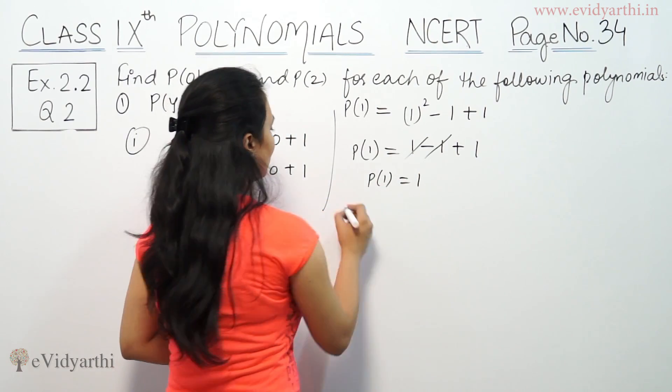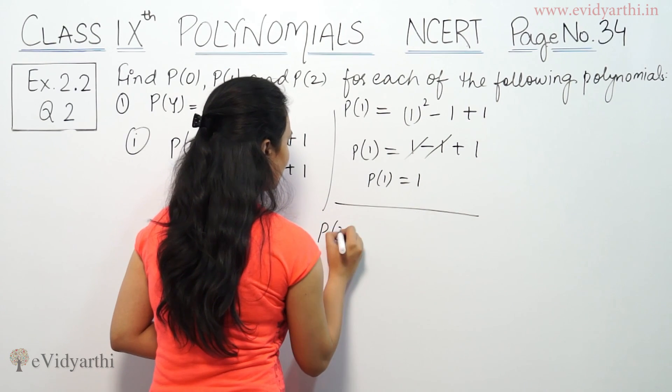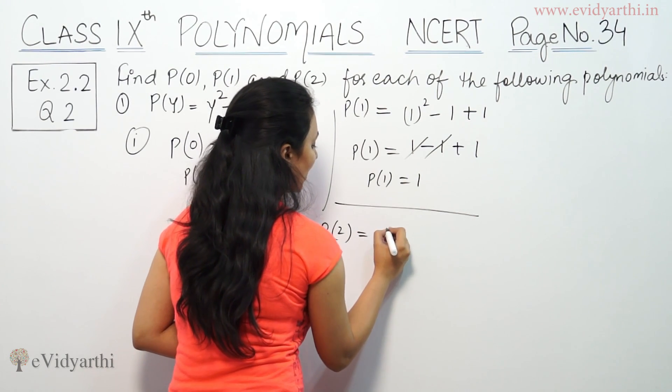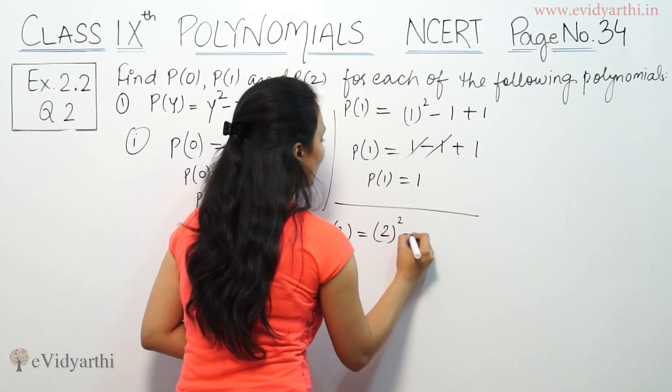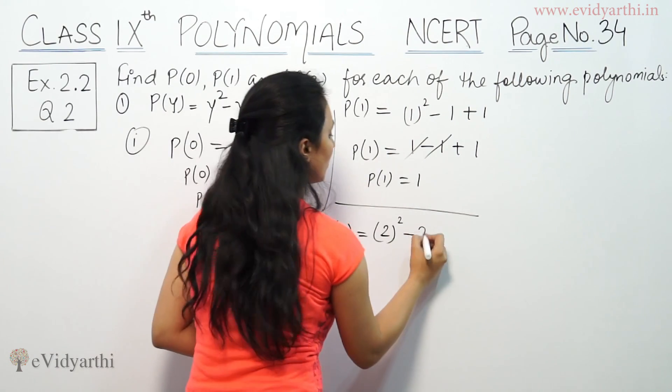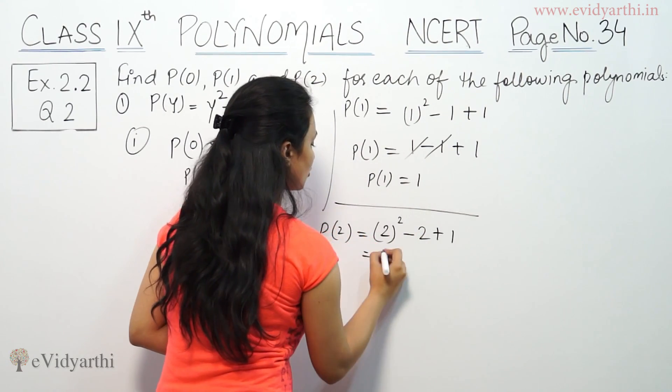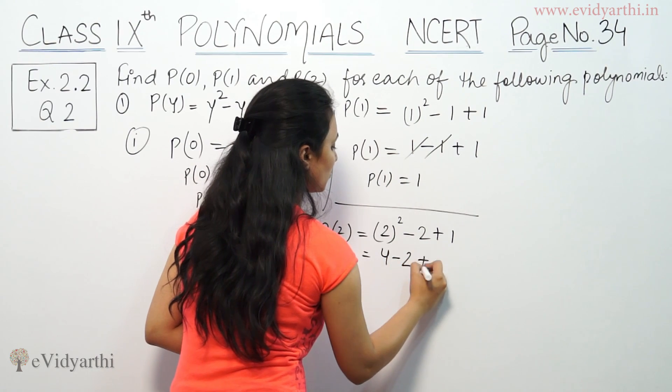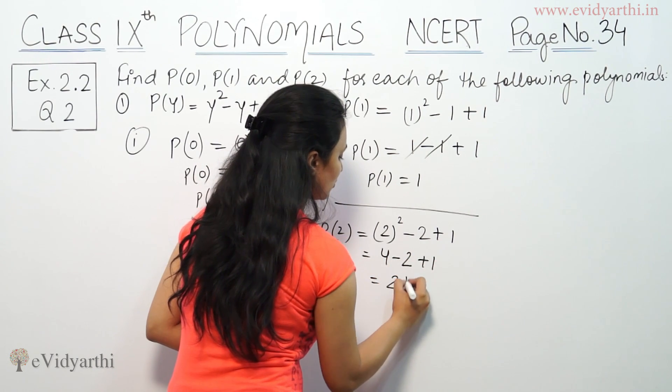Now we need to find P(2). For P(2), in place of y squared, that means 2 squared minus 2 plus 1. So 2 squared is 4 minus 2 plus 1, that means 2 plus 1, that means 3.